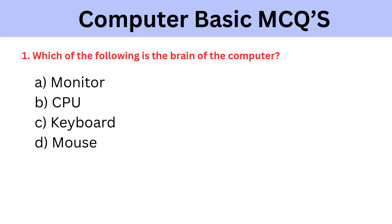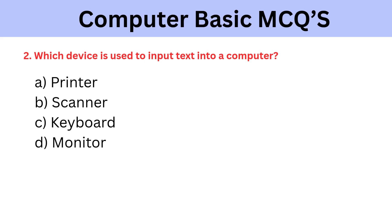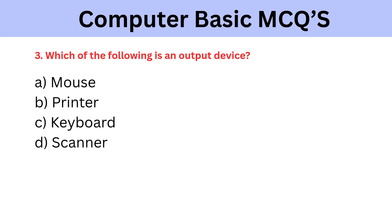Which of the following is the brain of the computer? A) Monitor, B) CPU, C) Keyboard, D) Mouse. The correct answer is CPU. Which device is used to input text into a computer? A) Printer, B) Scanner, C) Keyboard, D) Monitor. The correct answer is Keyboard. Which of the following is an output device? A) Mouse, B) Printer, C) Keyboard, D) Scanner. The correct answer is Printer.